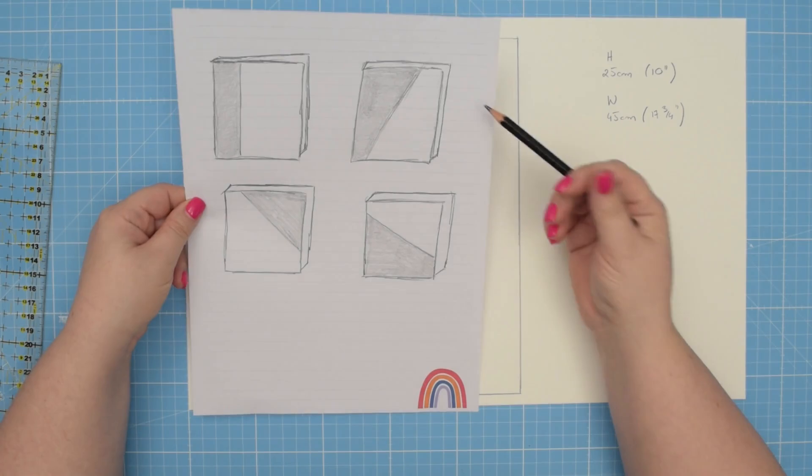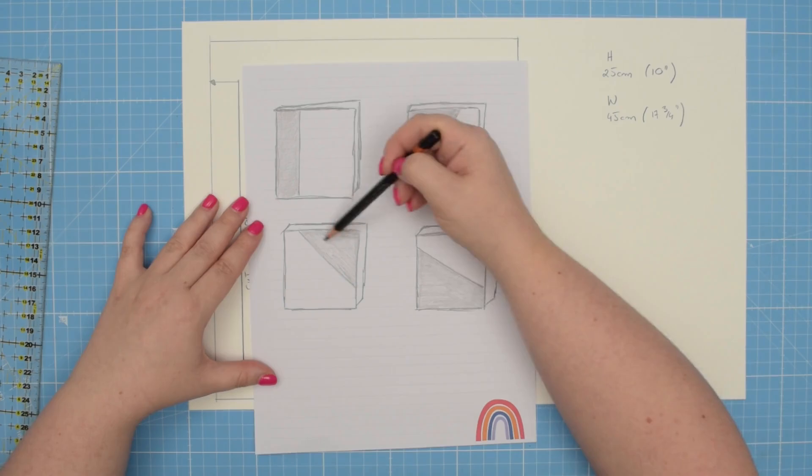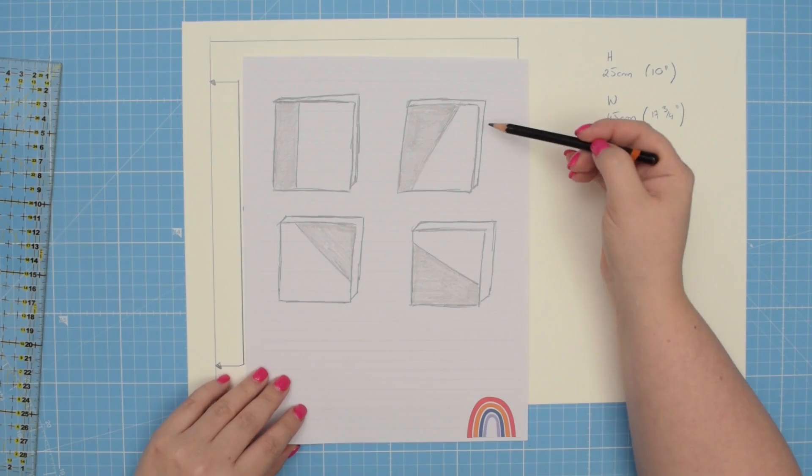I have drafted different ideas beforehand. And I think for the purpose of this tutorial, I'm going to go with this sample here. As you can see, you could divide it and maybe add an accent fabric in different angles. I'm going to use this idea for my cover.